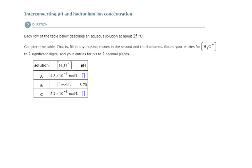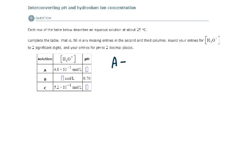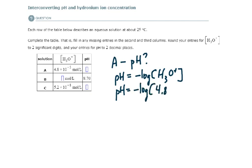For solution A, they want us to find the pH. pH is equal to the negative log of the hydronium ion concentration. What is the hydronium ion concentration that's given to us? It is 4.8 times 10 to the negative 5, and it's a concentration, so the units have to be moles per liter as we calculate pH, and that is what it is giving us.